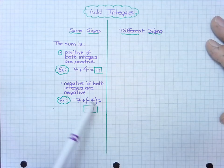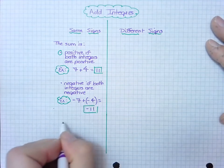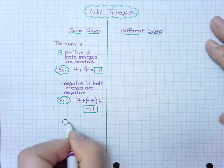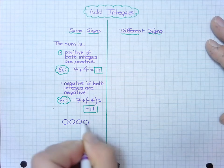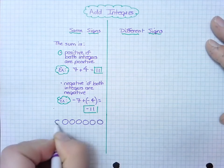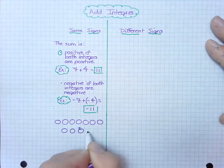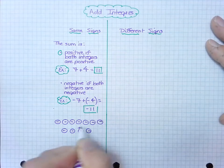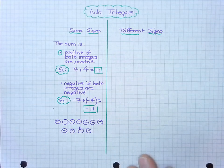You can also think about this in terms of counters which we did the other day. So if I have 7 negative counters, 1, 2, 3, 4, 5, 6, 7, and I add 4 more negatives, negative counters, then how many total negative counters do I have? A larger integer set of negative counters.